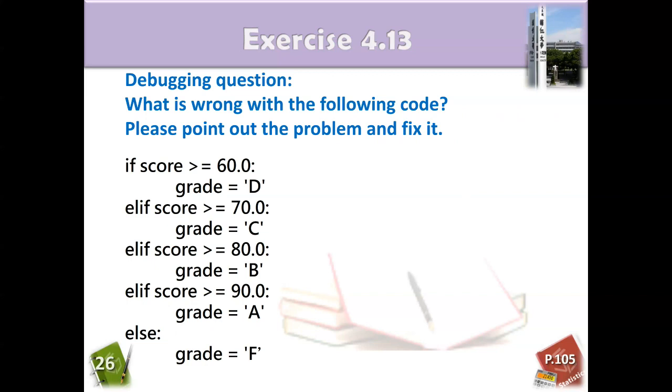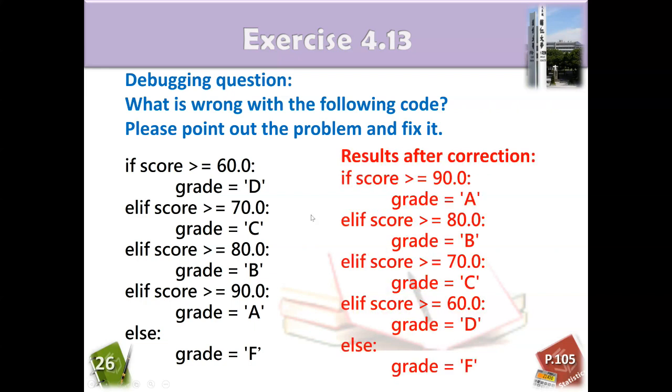For example, when the score is 90, I input 90. Then I find it is larger than 60, but I will get the grade D. So it's a problem. I input the score 90, but according to the sequence, 90 will not go into this part, it will directly go to the first part. So what's the problem? The problem is you have to do that according to the highest standard, then go down.